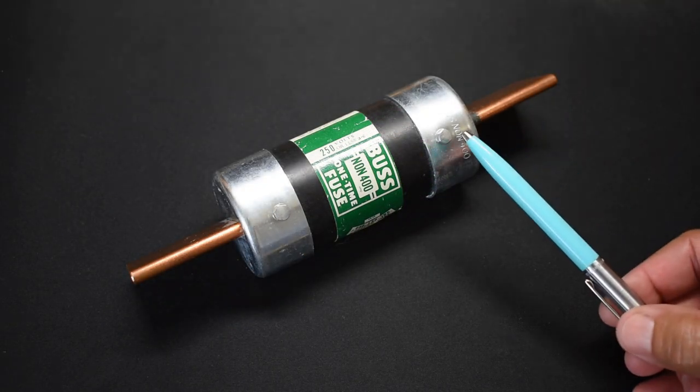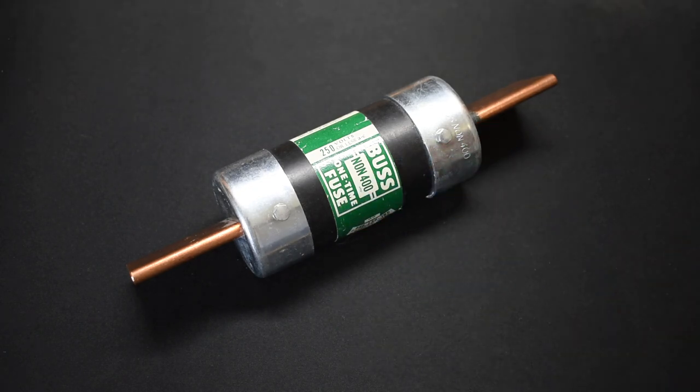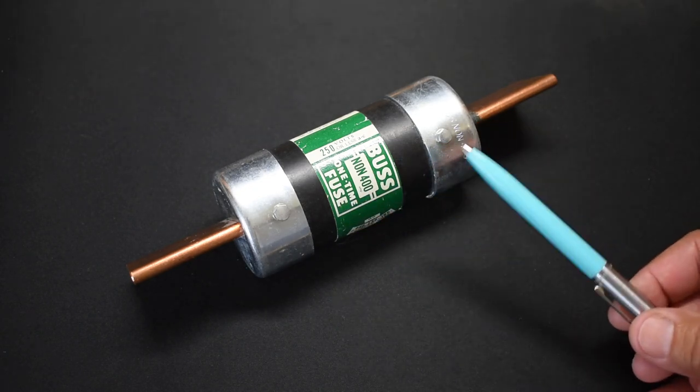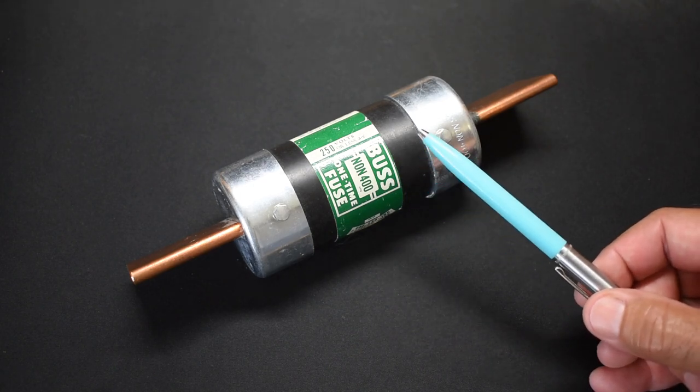To open this up, I'm going to remove these hex bolts. There's four of them, two here, two on the opposite side, and they're quarter inch. Inside fuses is typically sand, so I'm going to be placing this inside of a bowl first.